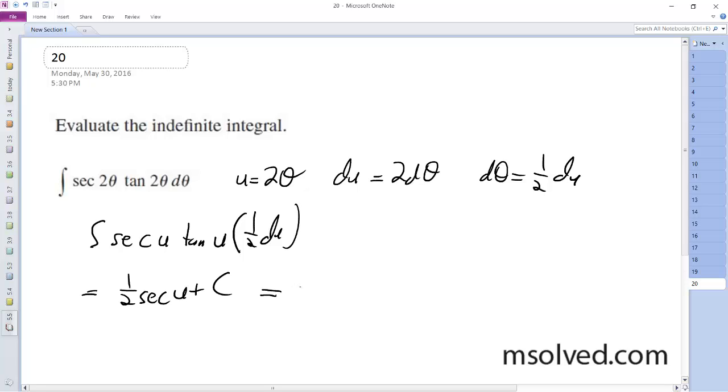And then substituting everything back in, we get 1/2 secant 2θ plus c. That's it.